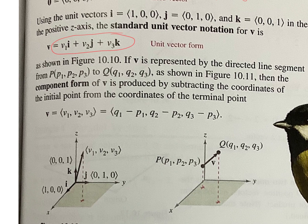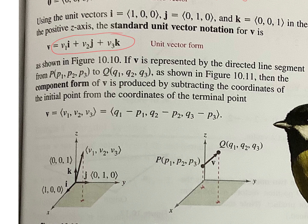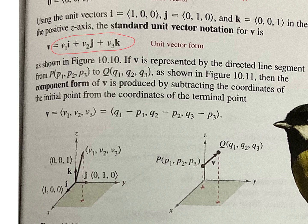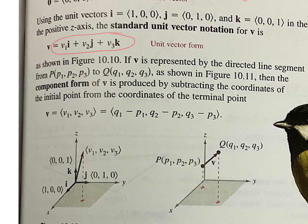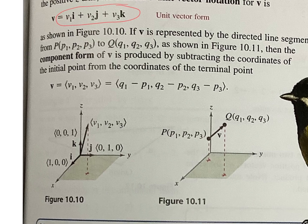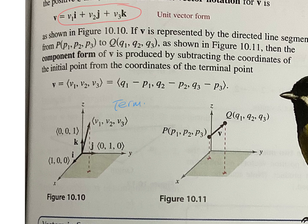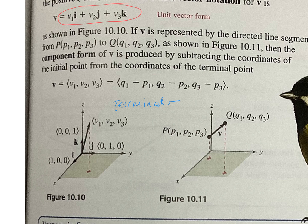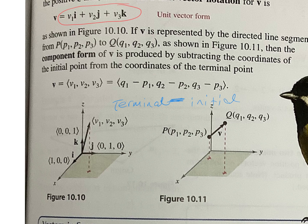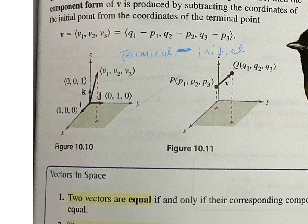So when we talk about finding the component form, just like we did before, you had a terminal point and you had an initial point. Initial is where the vector starts, and terminal is where it ends. So for the component form, it's terminal minus initial, just like it was before. Terminal minus initial. End minus the beginning.